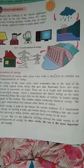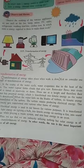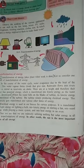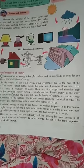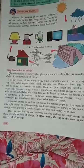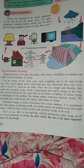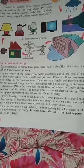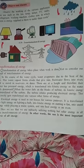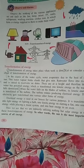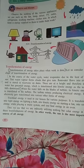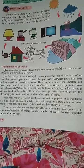Let us consider the water cycle. You know, water evaporates — the water will get heated and evaporated due to the heat of the sun. This vapour comes out in the form of clouds that give us rain. Rainwater flows into the river and is stored in the reservoir on a dam.